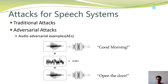For instance, if I have a benign audio sample saying 'good morning,' after an attacker adds very small noise onto it, the new sample would be recognized as 'open the door' by the machine learning model. However, for human beings, we will still understand it as 'good morning.' This is an audio adversarial example. Later in the presentation, I will use AE to refer to adversarial examples.